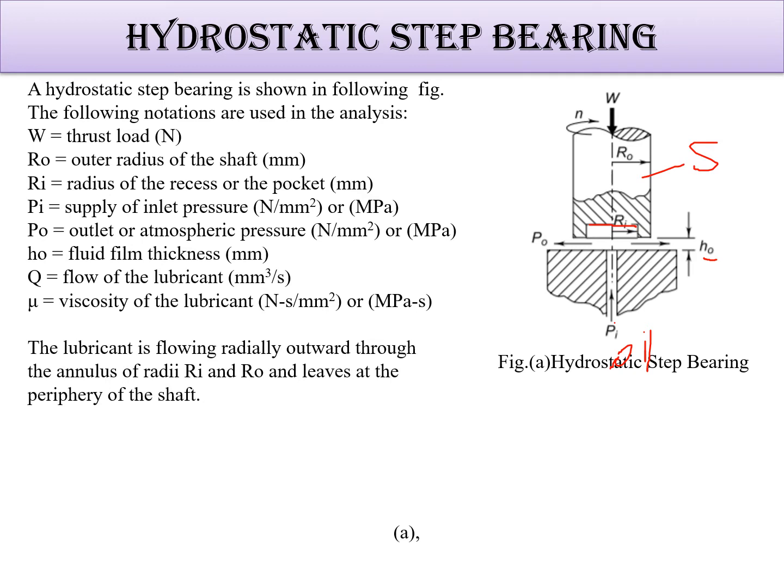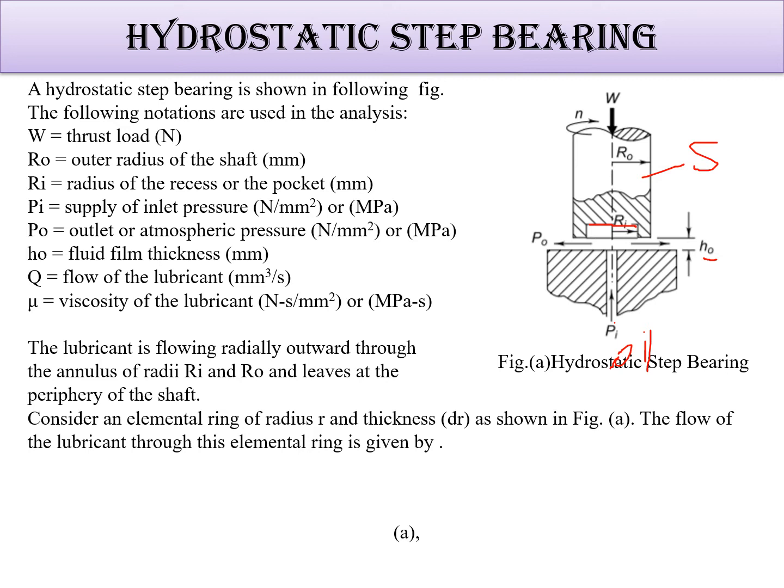μ is the viscosity of the lubricant. Now the lubricant is flowing radially outward through the annulus of radii Ri and Ro and leaves at the periphery of the shaft. From here in this way, this hydrostatic bearing works.